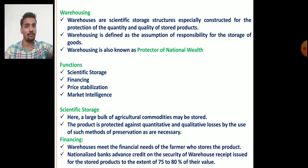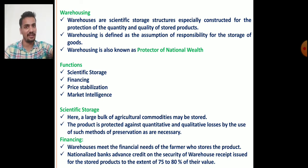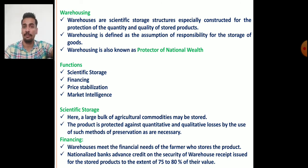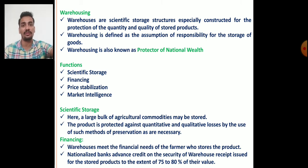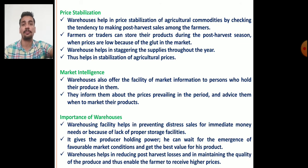Financing is the most important function. Warehouses meet the financial needs of farmers who store products. Nationalized or commercial banks advance credit or loans on the security of the warehouse receipt issued by the manager or owner of the warehouse for the stored product, up to 75 to 80 percent of the value of the product. The warehouse receipt serves as collateral security for the loan.